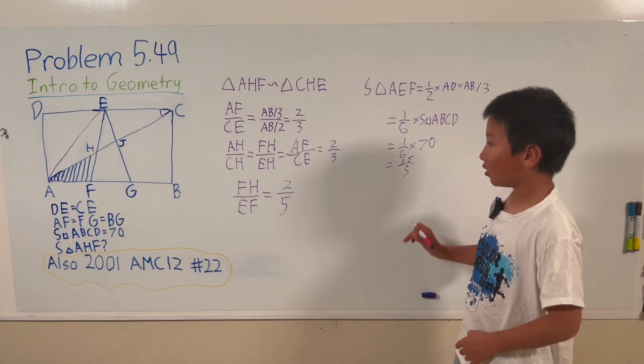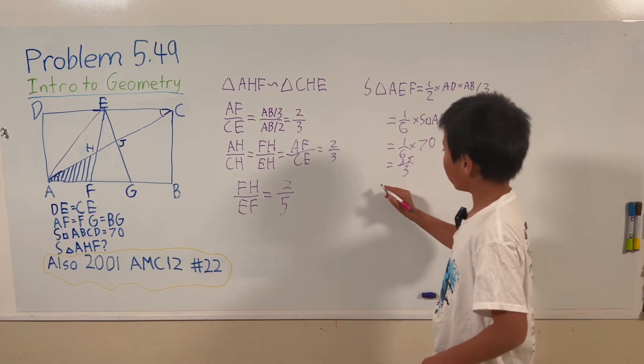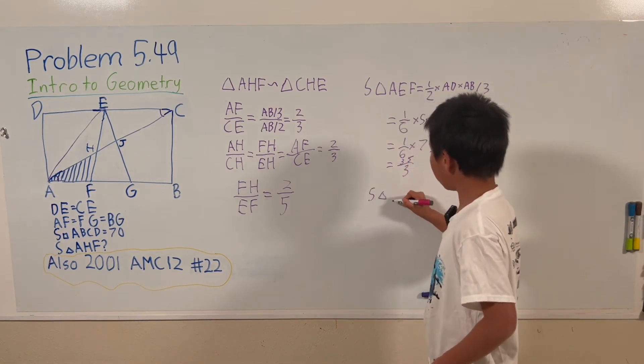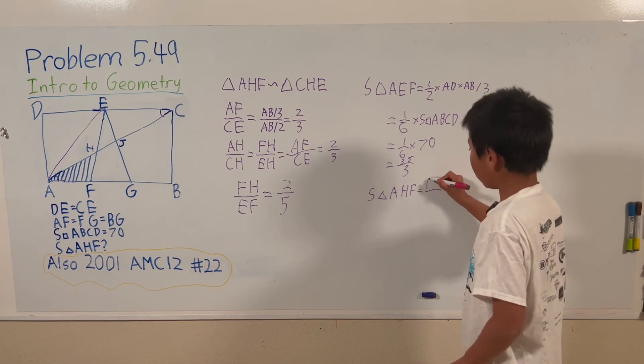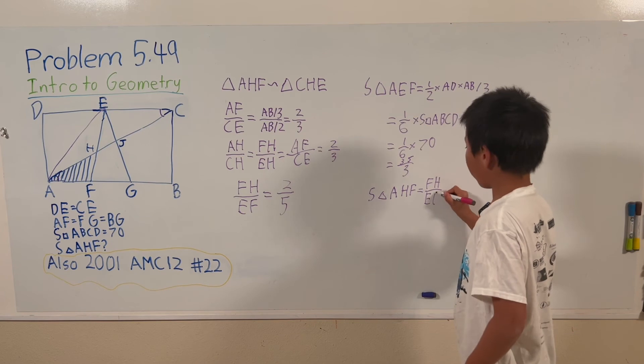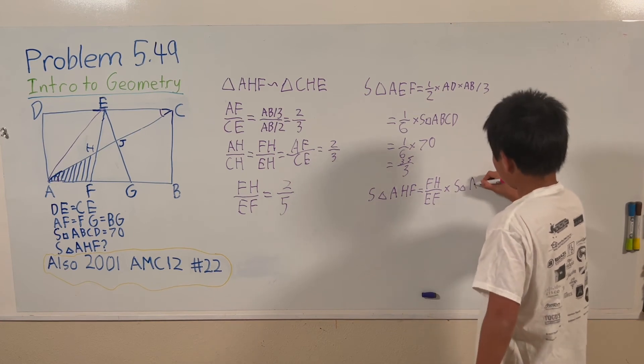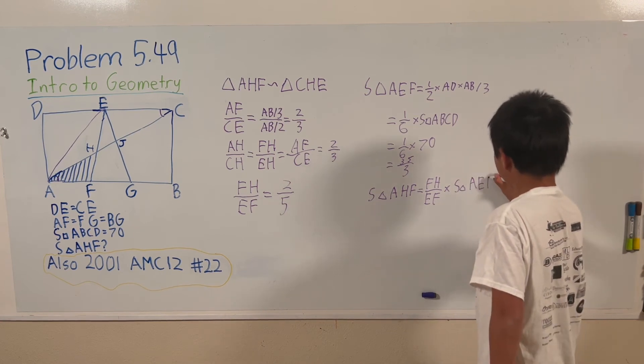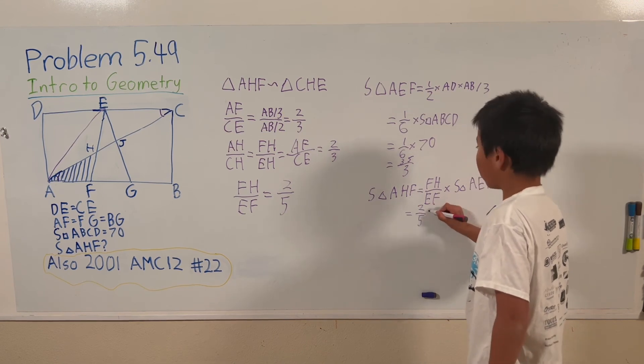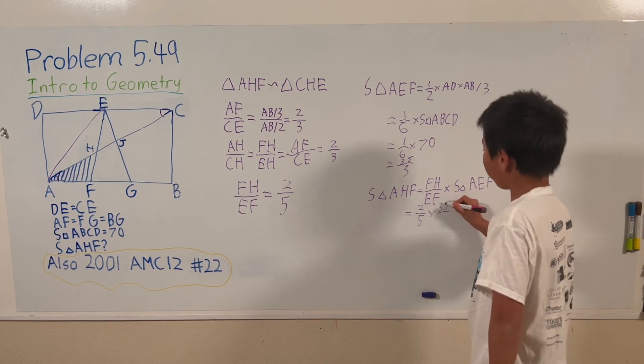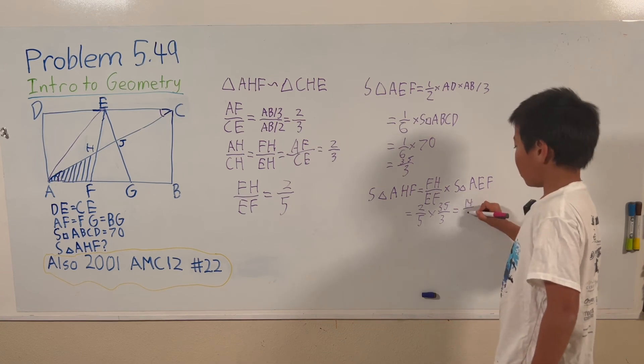Now all we have to do to find the area of triangle AHF is to multiply these together. S triangle AHF equals FH over EF times S triangle AEF. This equals 2 fifths times 35 over 3 equals 14 over 3.